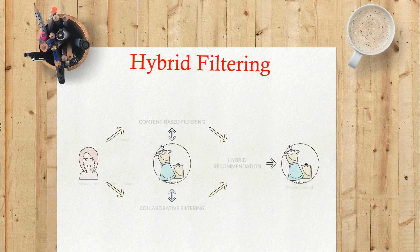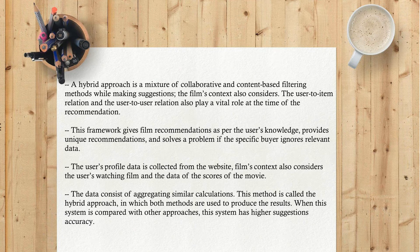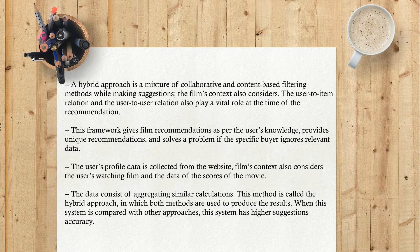Hybrid filtering is a hybrid approach that is a mixture of collaborative and content-based filtering methods. While making suggestions, the film's context, user-to-item relation, and user-to-user relation all play a vital role. This framework gives film recommendations based on the user's knowledge, provides unique recommendations, and solves problems if the user ignores relevant data. The user's profile data is collected from the website, and the film's context considers the user's watch history and movie scores, aggregating similar calculations.